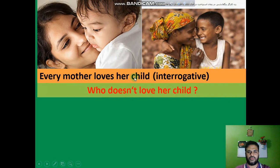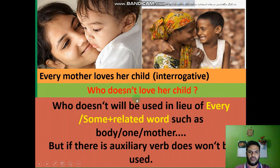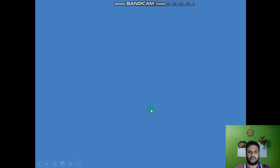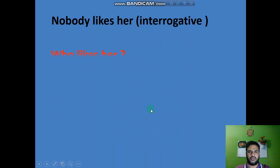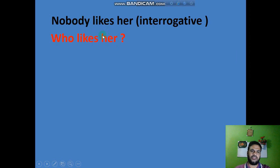You will use 'who does not' and then add a note of interrogation. Nobody: if you see any assertive sentence with 'nobody', for example 'Nobody likes her', and you want to change it to an interrogative sentence, remember this rule.